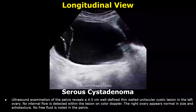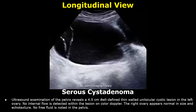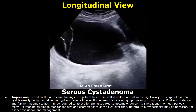This report example is of serous cystadenoma. There is a well-defined thin-walled unilocular cystic lesion in the ovary. No internal flow is detected within the lesion on color Doppler, and then the appearance of the right ovary is written. In most cases it can be difficult to conclude that it is a serous cystadenoma, so in the impression you can just write the features seen and then write about clinical correlation and further management.